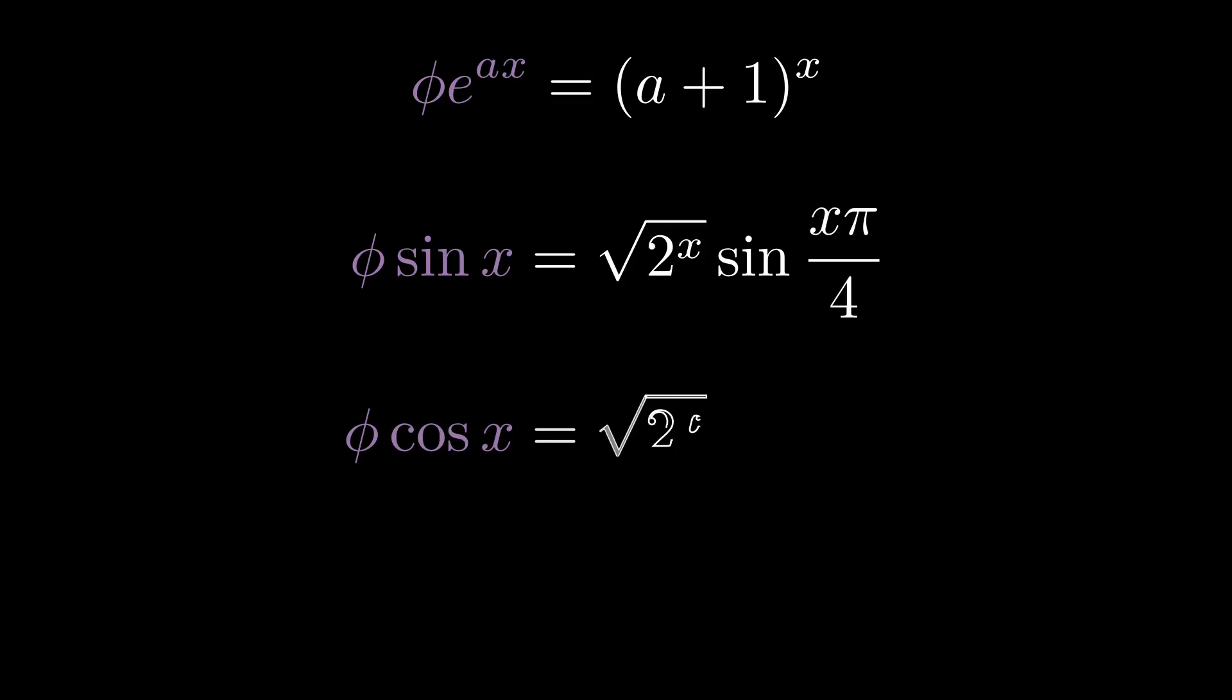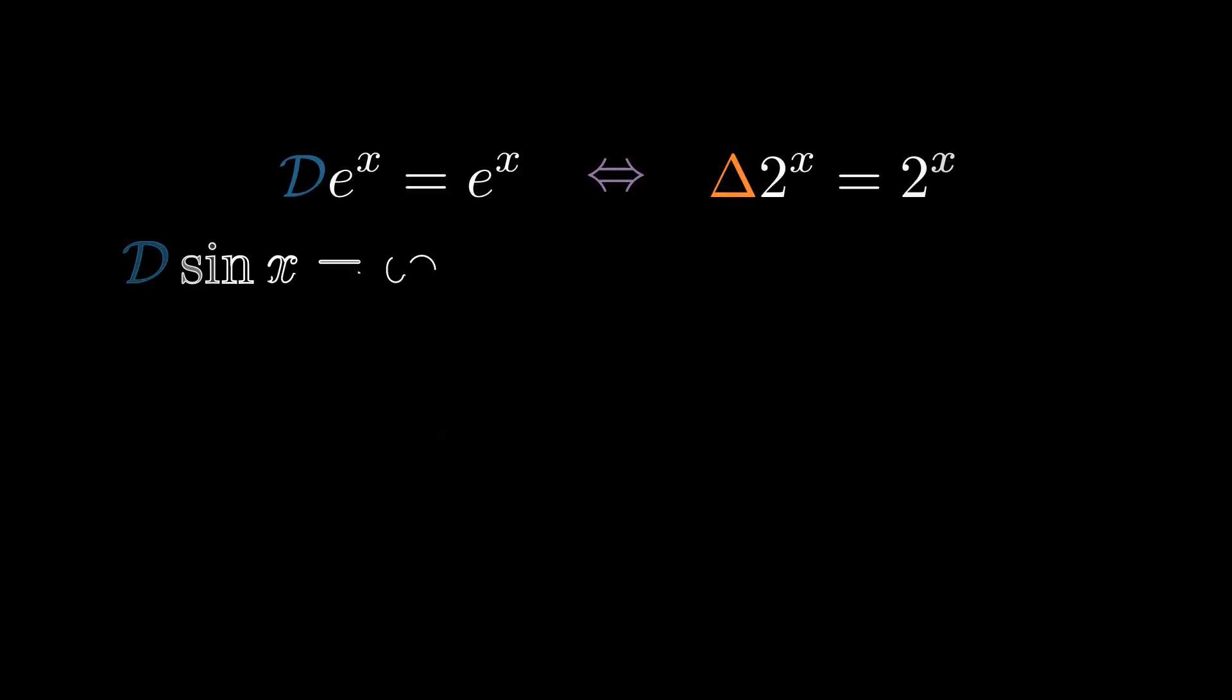We can use the same technique to compute the phi of cosine. And I won't go into the details because they're surprisingly finicky, but it turns out the phi of the natural log is the harmonic series.